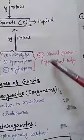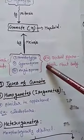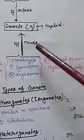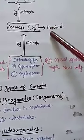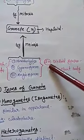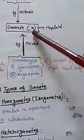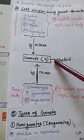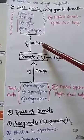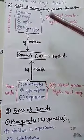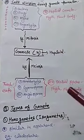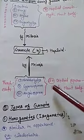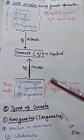Diploid organisms produce gametes by meiosis division. Meiosis is also known as reduction division because gametes are always haploid — if the organism is 2N and the gamete formed is N, the chromosome number is halved. In bacteria, fungi, algae, and bryophytes the chromosome number in gamete and organism is the same, so mitosis is called equational division. But meiosis is reduction division because the chromosome number in the gamete becomes half of the parent.